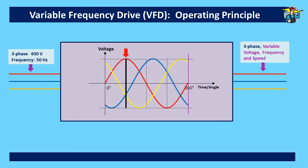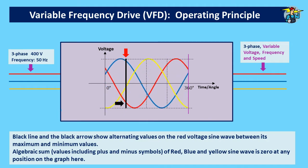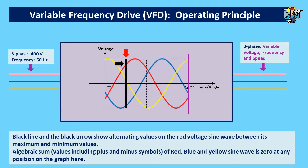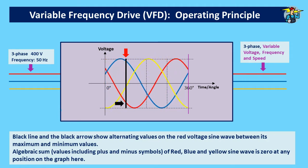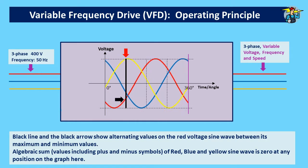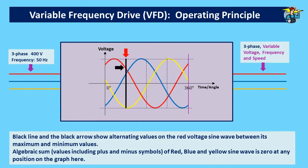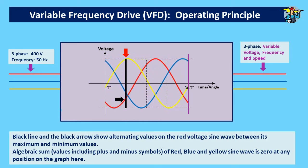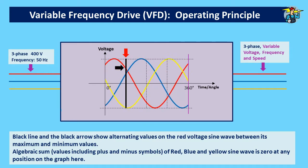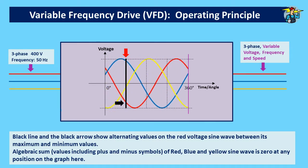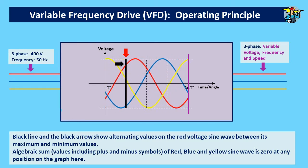The black line and the black arrow show alternating values on the red voltage sine wave, between its maximum and minimum values. The algebraic sum — that is, the values including plus and minus symbols — of the red, blue, and yellow sine waves is zero at any position on the graph here.